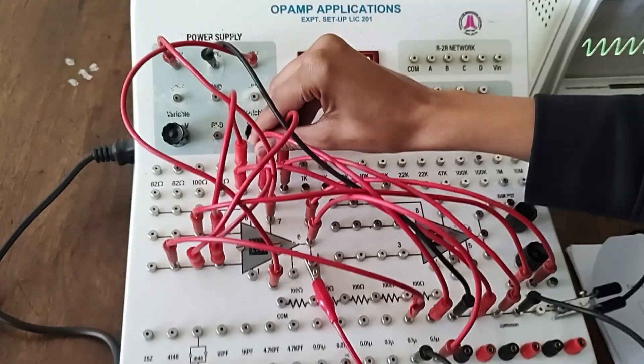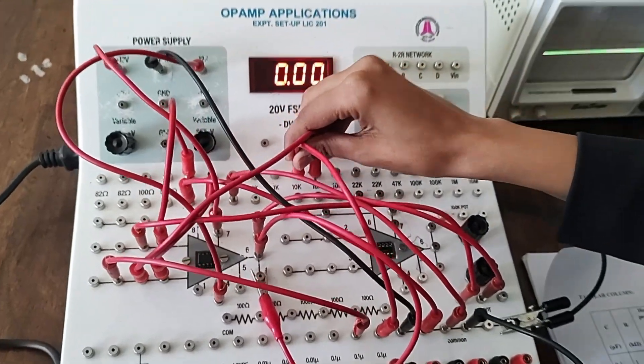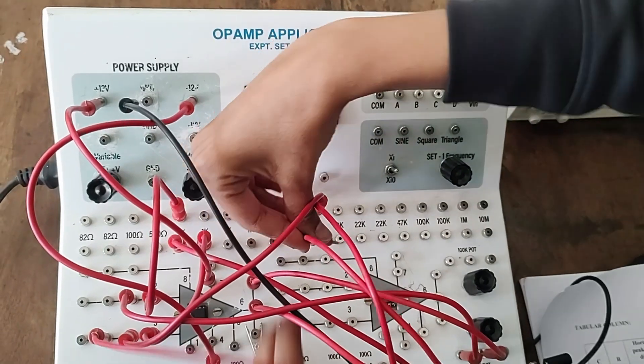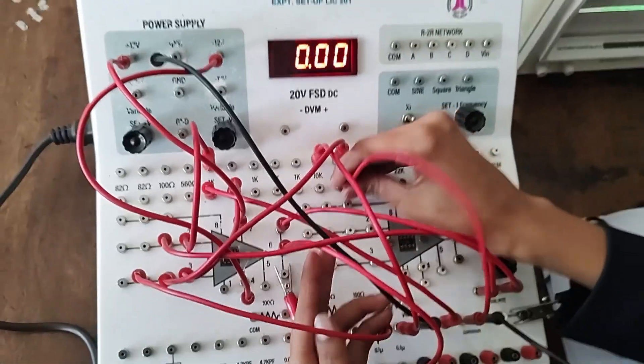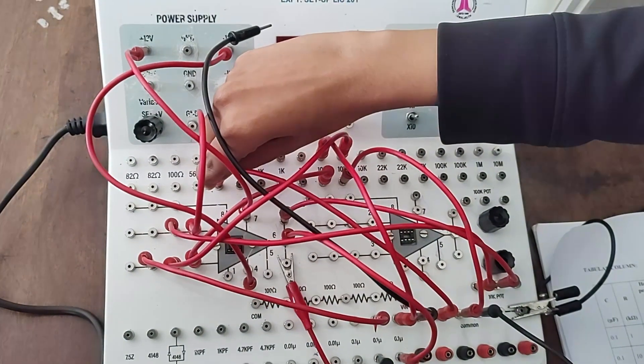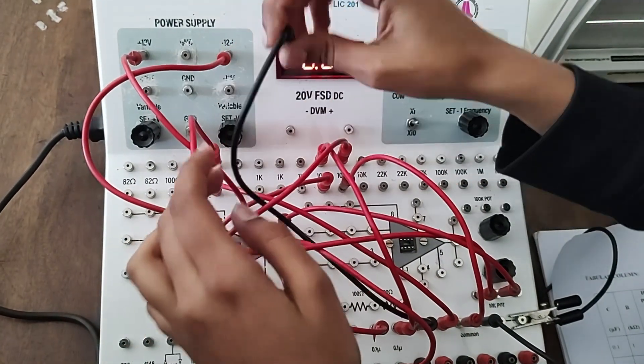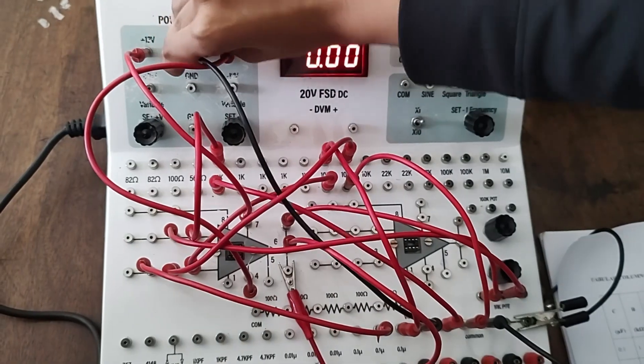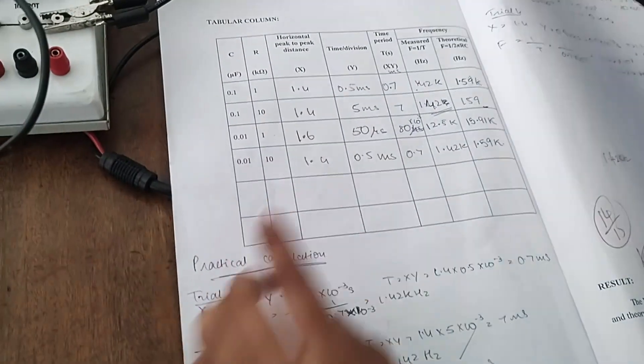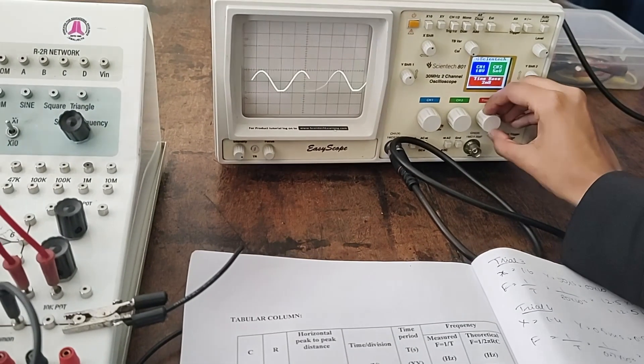Make sure nothing else changes. When you do this, you've shifted R to 10k, right? So obviously this will change. Change the time per division until you get something similar to what you had before.